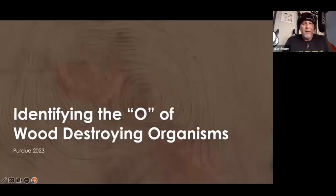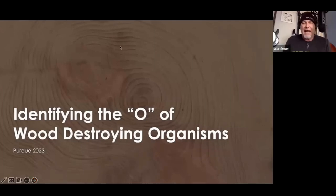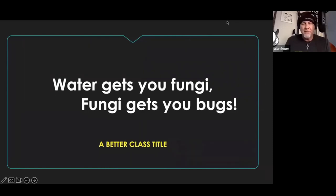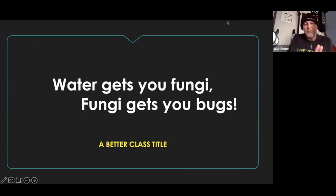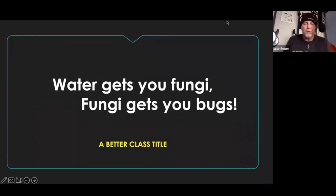So here we go. The name of the course today that was assigned to me is called Identifying the Wood Destroying Organisms. And that's fantastic. But I decided to change the name of the class because I think this is where we want to go. I want to talk about the issues that we get when we have water problems that give us fungi and decay rot, and then the bugs that kind of follow up based upon that. So that's going to be the core of my course.